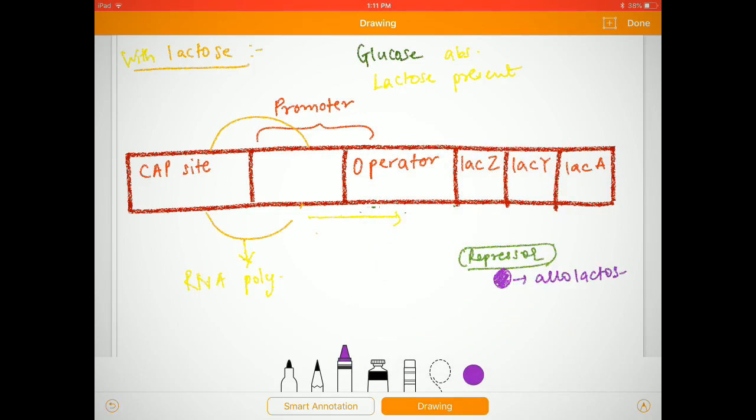The further enzymes like beta-galactosidase, permease, and transacetylase will be produced, and more and more lactose will be uptaken by the cell for its survival. Basically, here we can see E. coli is using or creating or making those enzymes which are required at that point. It is not making unnecessary enzymes.